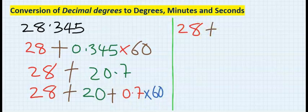To do this, I'm going to have 28, then 20. Then, if I multiply 0.7 by 60, I'm going to have 42.